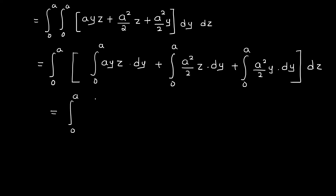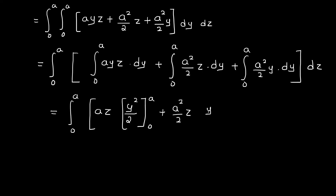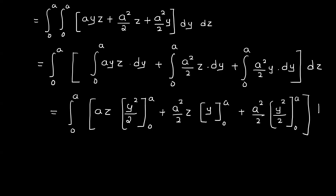Now integrating with respect to y from 0 to a. The term a squared by 2 times z is a constant, so integrating y gives y squared by 2. Similarly, the next term with a squared by 2, z is constant, and y is integrated to give y squared by 2 evaluated from 0 to a.